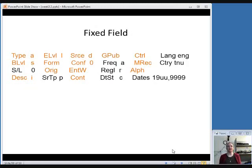So, here is how this would look broken down as the fixed field is presented in OCLC. You can see the things that we've talked about.